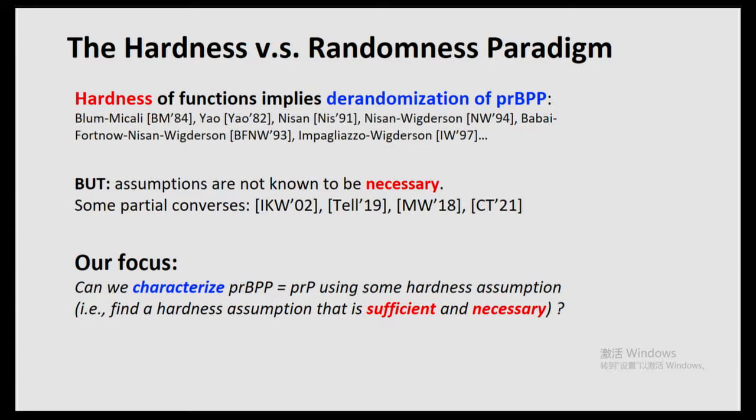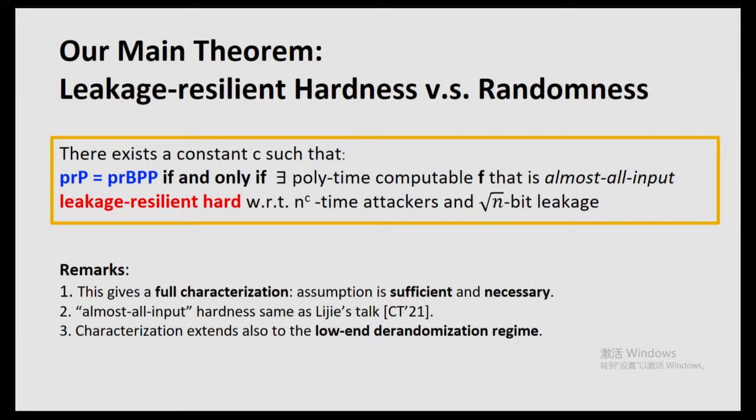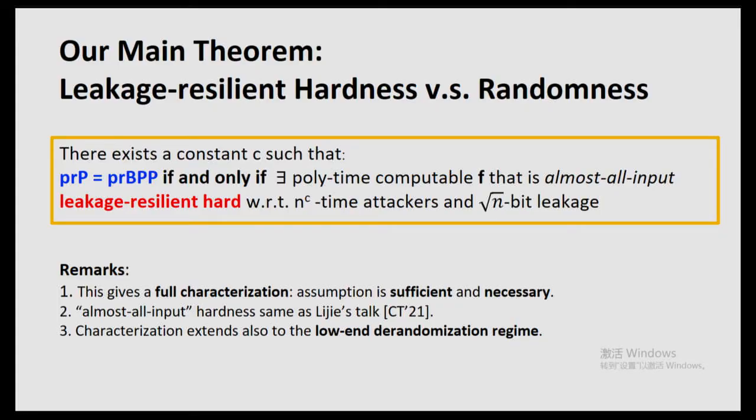So today we ask: if we want to prove BPP equals P, what is the assumption we might work on? Let us present our main theorem, which we refer to as leakage-resilient hardness versus randomness. As we shall see very soon, leakage-resilient hardness originated in cryptography — it's a classic study from the 80s and a standard notion in cryptography. Roughly speaking, leakage-resilient hardness requires a hard function F where it's still hard to compute F(x) even with the presence of some side information from F(x). I leak you something about F(x), but it's still hard to compute F(x).